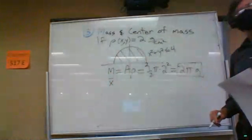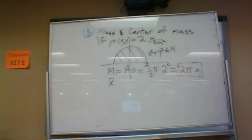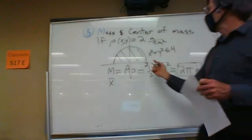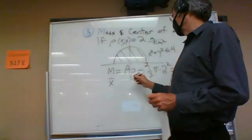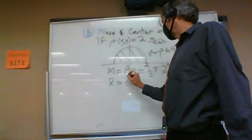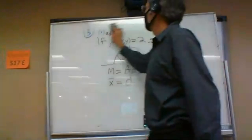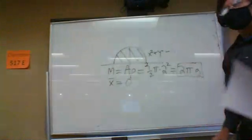How about the x-coordinate of the center of mass? This is very easy too — no calculus. If it's constant density, then it's just the point right in the middle. If there's a symmetry across here for constant density, it's right in the middle. So x-bar is equal to zero.